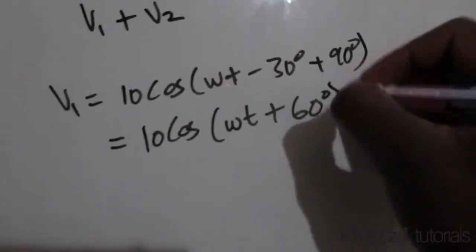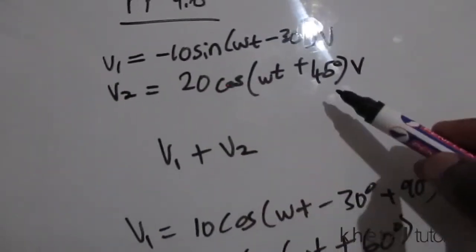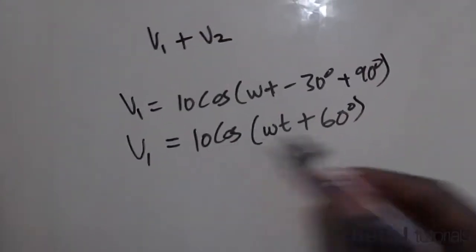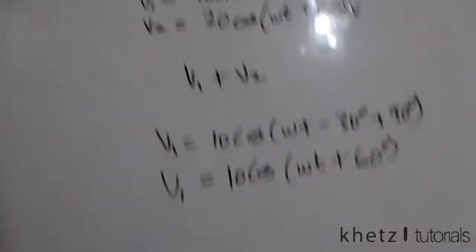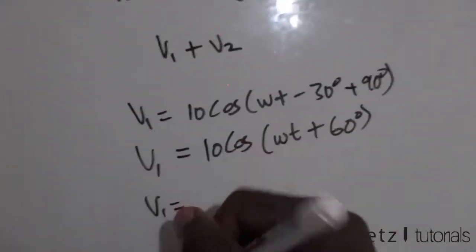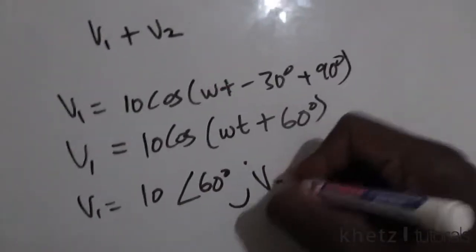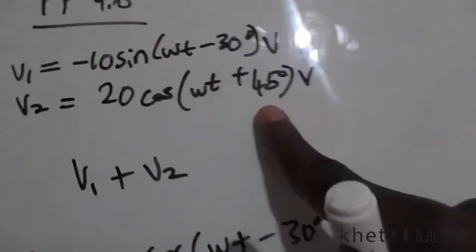You can transform these two into phasors by checking the amplitude and the phase. v1 in phasor form is 10∠60° and v2 is 20∠45°.